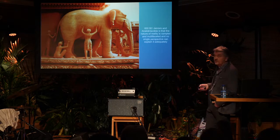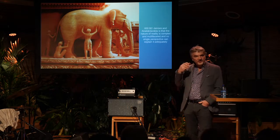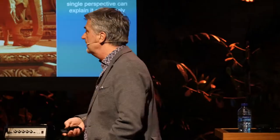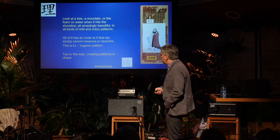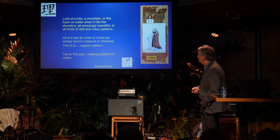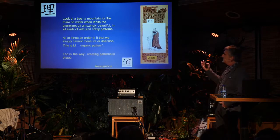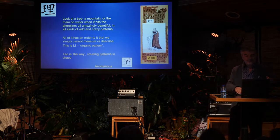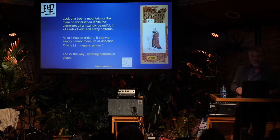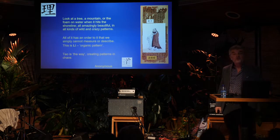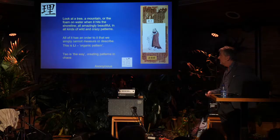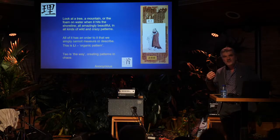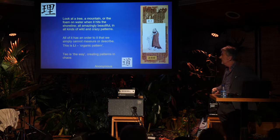This way of thinking systemically is already 600 years before Christ. Here's a nice quote from Lao Tse: 'Look at the tree, a mountain, or the foam on water when it hits the shoreline — all amazingly beautiful, in all kinds of wild and crazy patterns.' All of it has an order that we simply cannot measure or describe. This is 'Li,' the organic pattern — and people were already thinking about what underlies all those patterns we observe in nature.